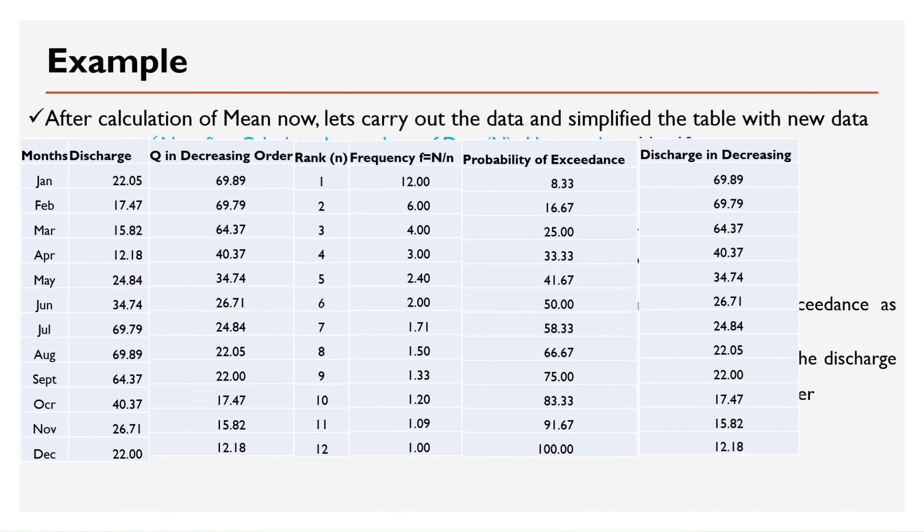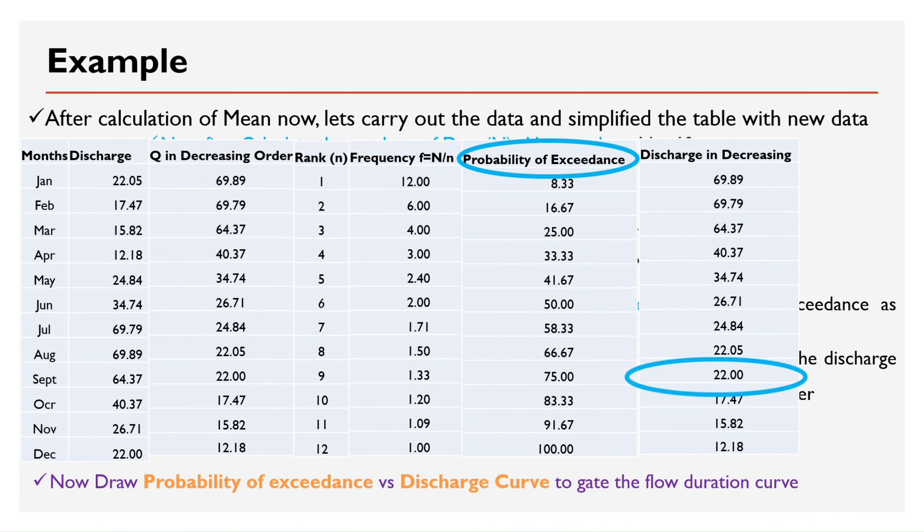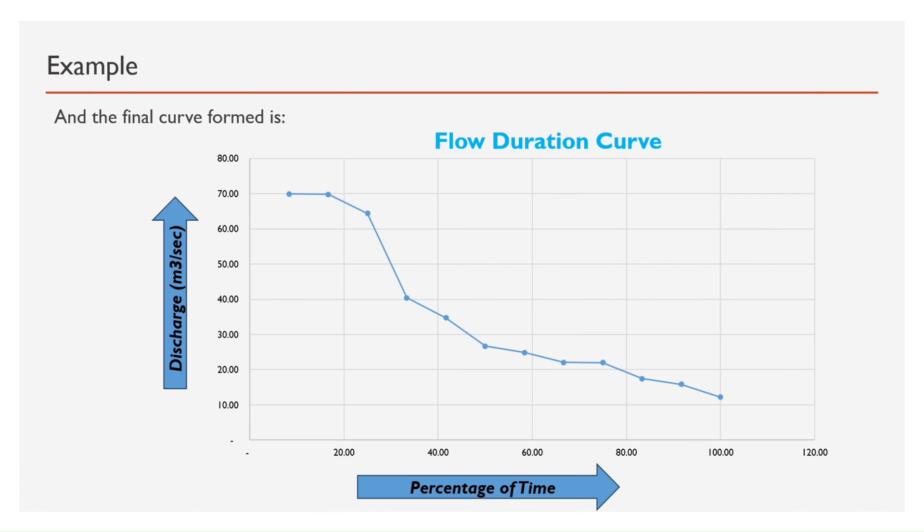Now again place the discharge in descending order. Now draw probability of exceedance vs discharge curve to get the flow duration curve.